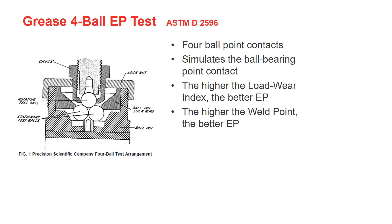Next time, when you want to choose a grease for your ball bearing, you can look at the speed factor or NDM of your bearing based on the bearing design, geometry, and rotating speed. This will help you find the right base oil viscosity for your grease. Then, when you compare two greases, the one with the higher four-ball test result will be the better choice.